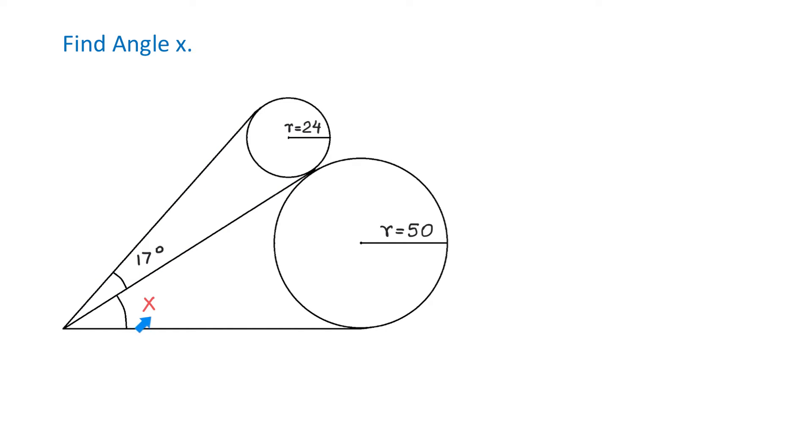We will find angle x that is formed by two tangents to the larger circle. Let the point outside of the circles be point A, the center of the smaller circle be point B, the center of the larger circle be point C, and the point of tangency of these two circles be point D. Now let's connect point A with the centers of each of these two circles.